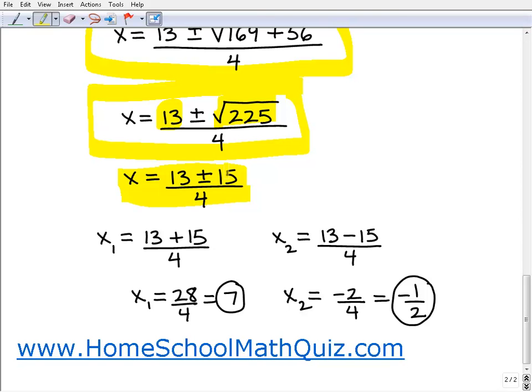Remember, a quadratic equation will always have two solutions. So how we determine that is this: we have 13 plus or minus 15. We're going to look at both versions of it. One solution is going to be 13 plus 15 over 4, and then the second solution is going to be 13 minus 15 over 4.